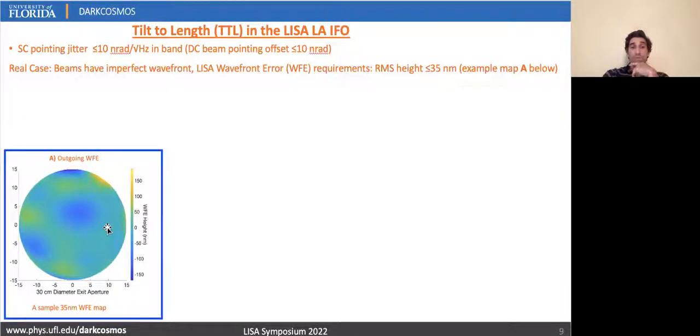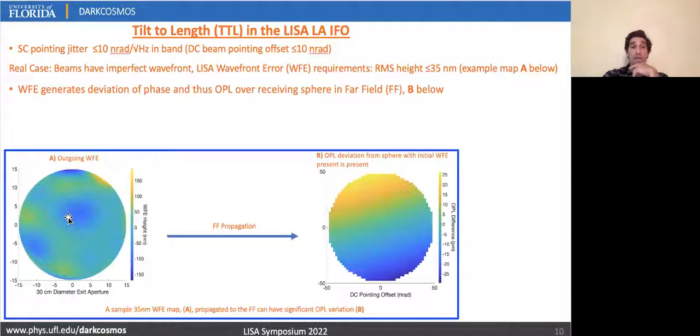For real beams, these include phase aberrations by imperfections in the optical system. Current requirements restrict LISA wavefront error (WFE) to an RMS height of 35 nanometers. Such an example is shown here. When propagated to the far field, the wavefront is now shifted off the sphere centered on our transmitting spacecraft's center of rotation, so there's going to be significant phase and thus length deviations of the beam, shown here, out to 15 nanoradians.